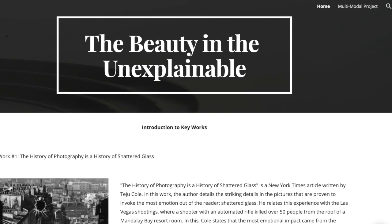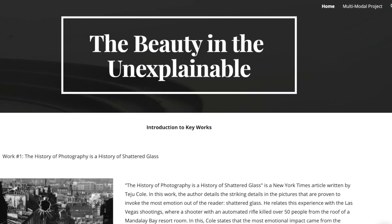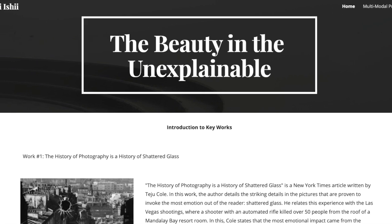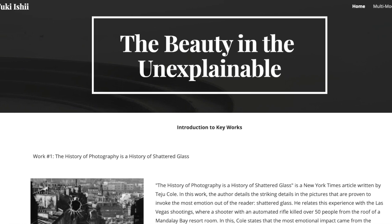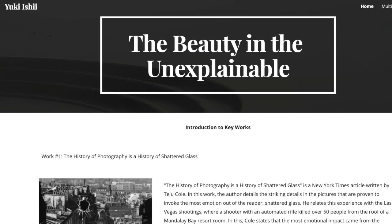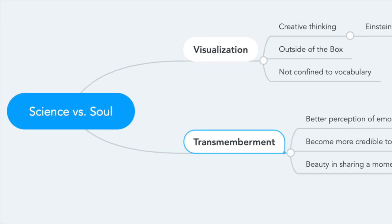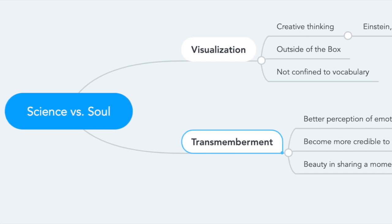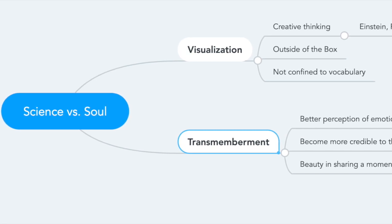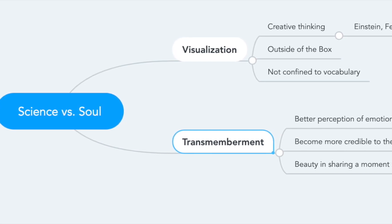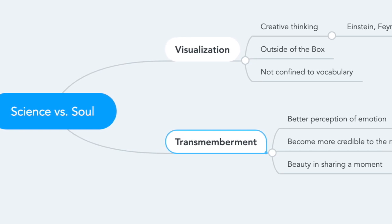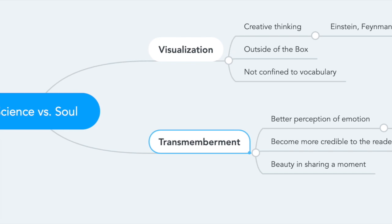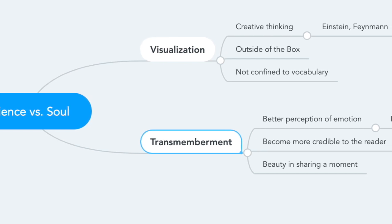Before we begin, I want to talk a little bit about my website, The Beauty in the Unexplainable. This website provides insight into how I like to answer the questions arising as a result of the coronavirus. This mind map shows two main ideas of my essay: Science vs. Soul — two different mediums in literature that can be used through visualization and transmemberment to understand more about each type of literature.